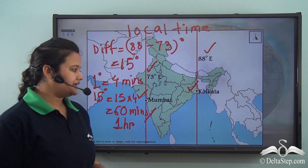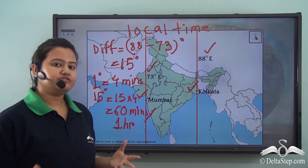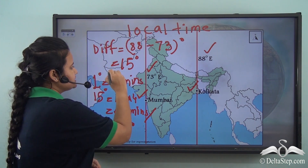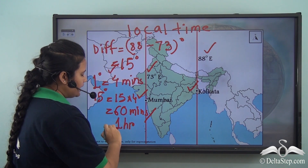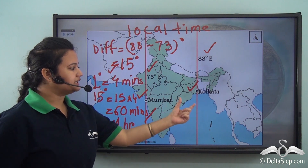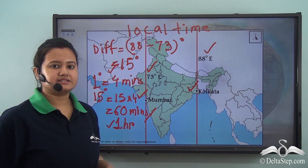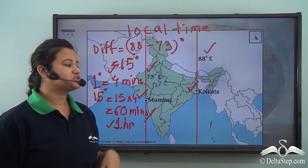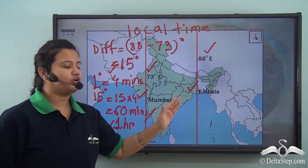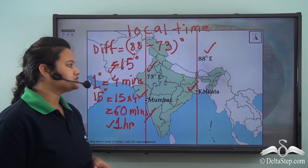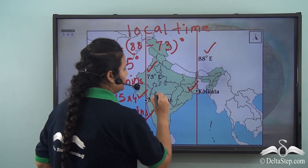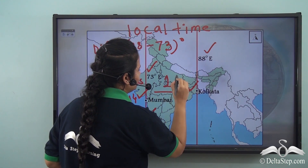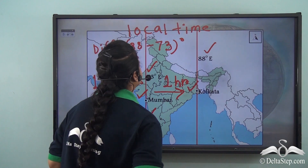We can say that there is a difference of 15 degrees or 1 hour between these two places. And since Kolkata lies to the east of Mumbai, Kolkata is 1 hour ahead of Mumbai.